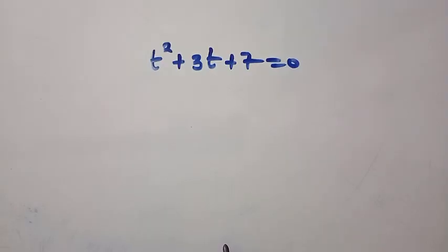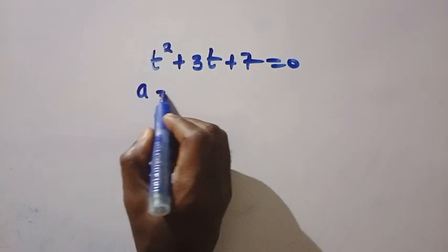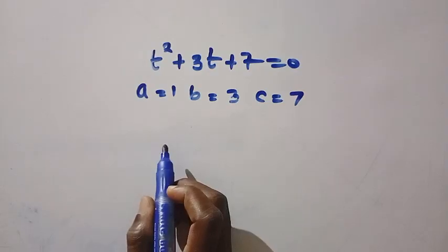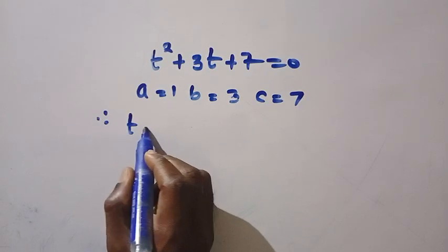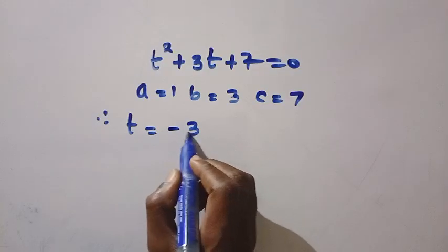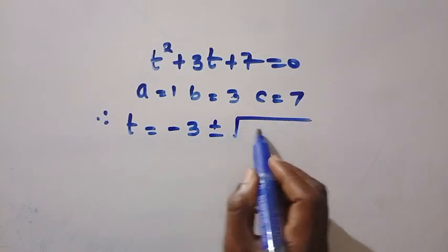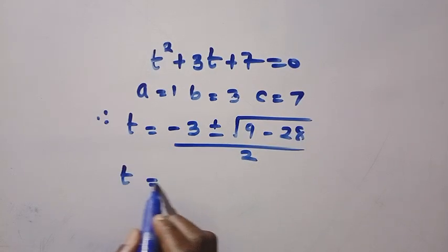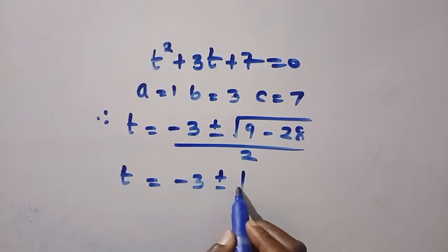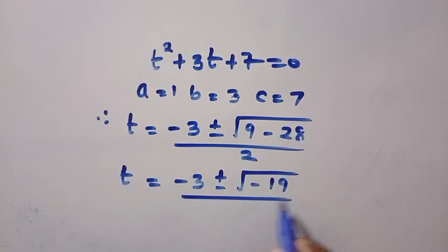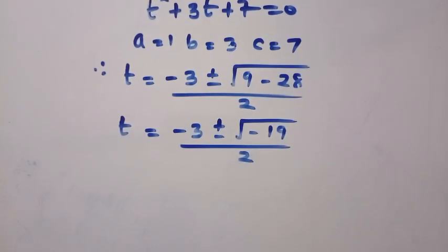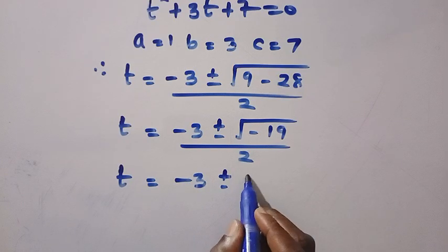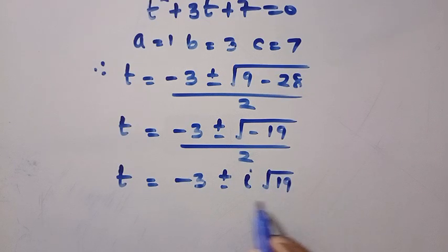Solving this quadratically, coefficient of t^2 is a = 1, b = 3, c = 7. Applying the quadratic formula, we have t = (-3 ± √(9 - 28)) / 2. We have t = (-3 ± √(-19)) / 2. But square root of -19 is a complex root, which is equal to (-3 ± i√19) / 2.